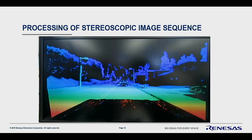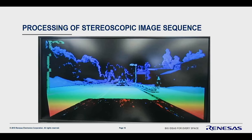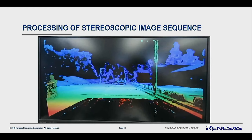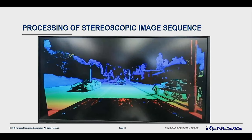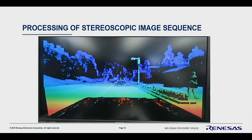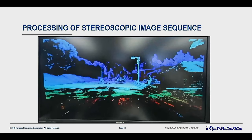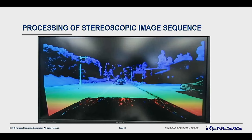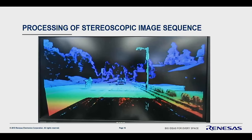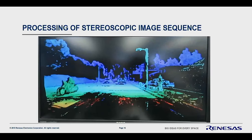We also developed stereo depth processing IP. Taking stereoscopic images from a simulator, we compute depth of objects using rainbow color coding: red is closest, then orange, yellow, green as you go further from the car. In a video stream, you can see a lamp post change color to red as it approaches — this depth estimation IP is the kind of capability you'd deploy in automotive cars for autonomous driving. Using the simulator lets you test different weather patterns and conditions to evaluate algorithm robustness.